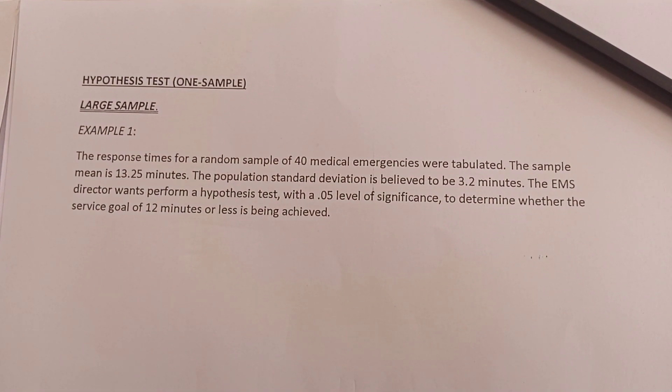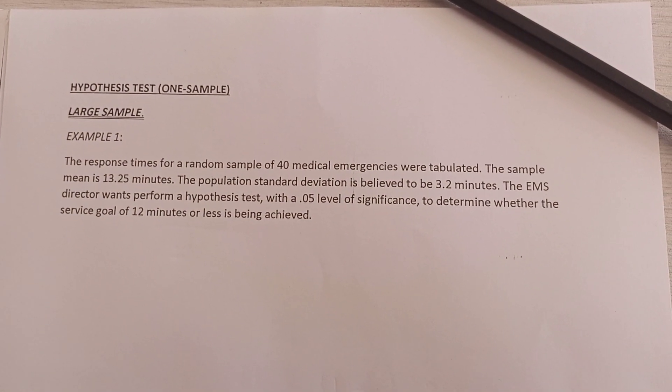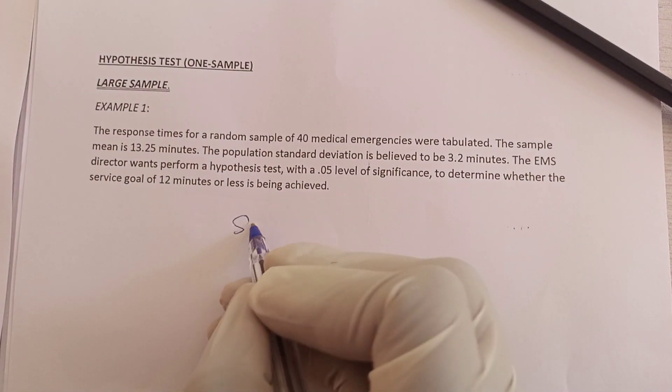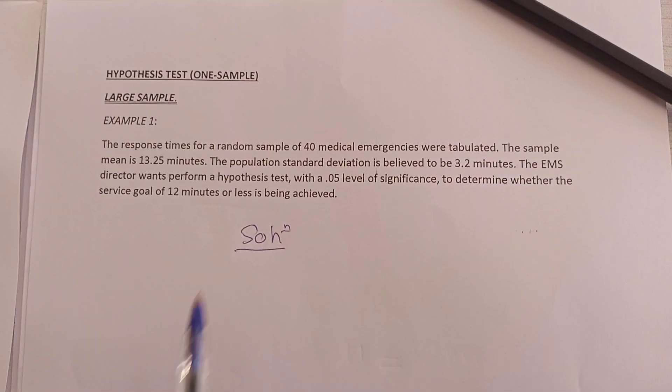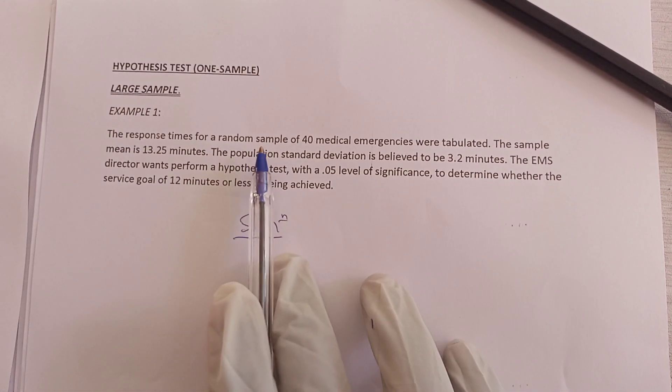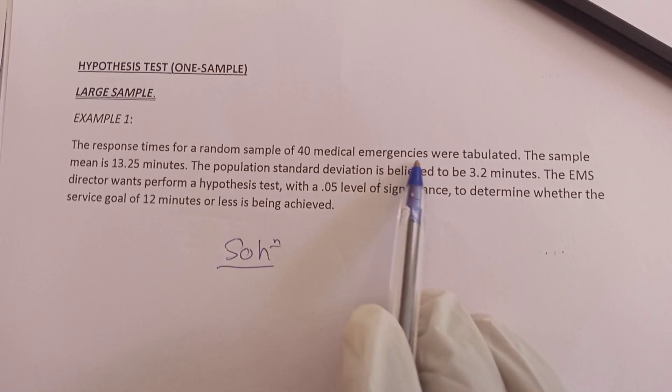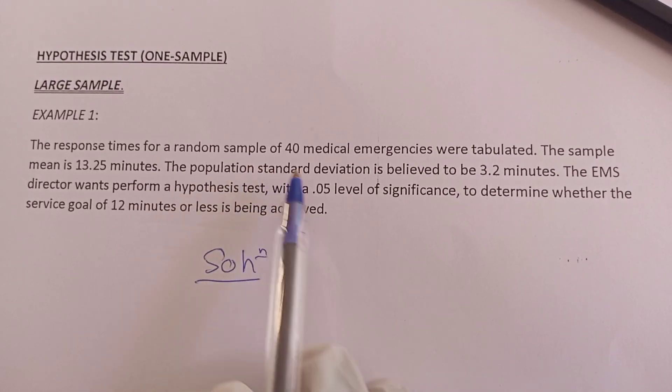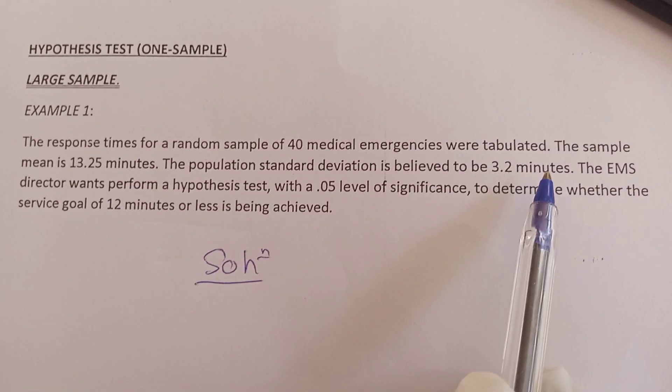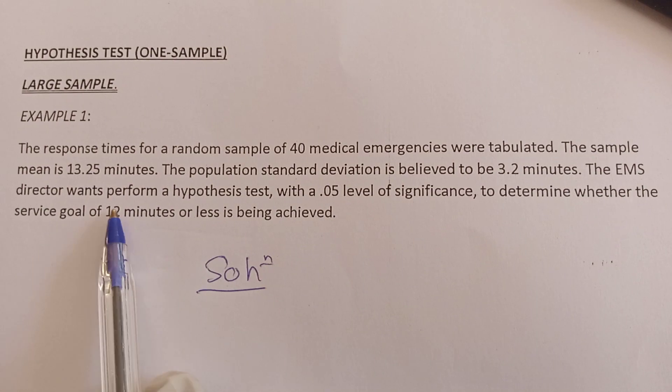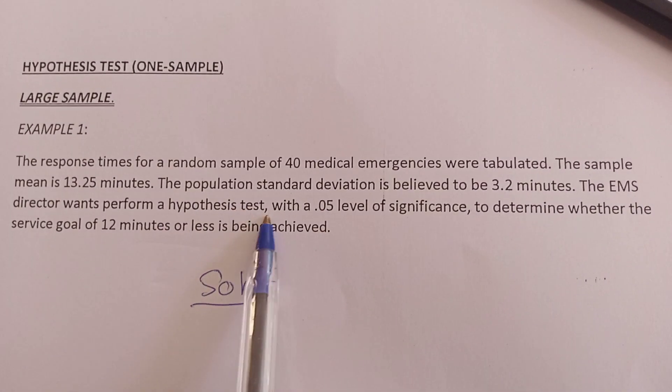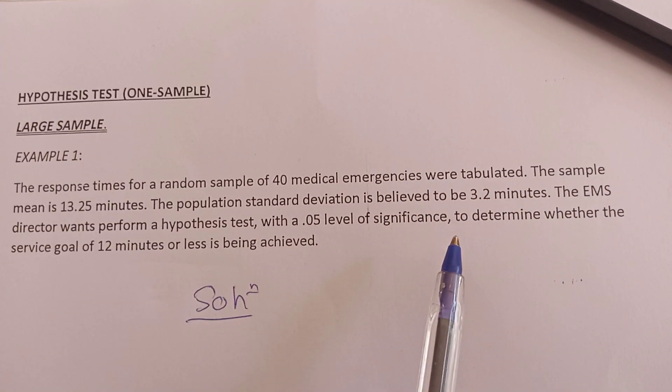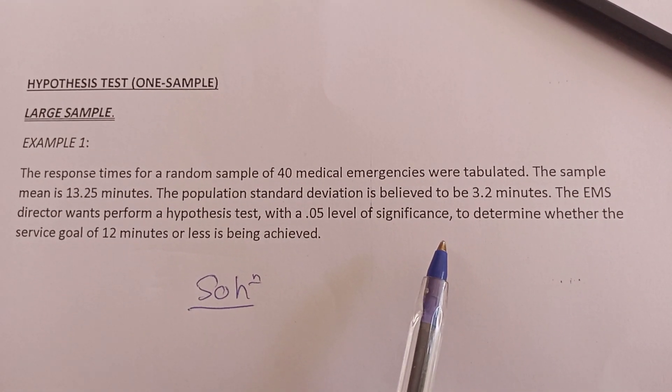Welcome! In this lesson we are going to see how to use the normal traditional method to solve the hypothesis test. Let's look at a question: the response times for a random sample of 40 medical emergencies were tabulated. The sample mean is 13.25 minutes. The population standard deviation is believed to be 3.2 minutes. The EMS director wants to perform a hypothesis test with a 0.05 level of significance to determine whether the service goal of 12 minutes or less is being achieved.